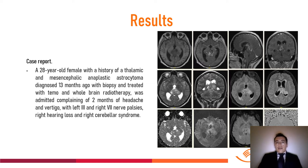MRI before the first surgery is shown here. An infiltrative lesion is observed with a cystic component at the mesencephalic tectum, thalamus, and left ventricular atrium — hypointense on T1 with heterogeneous contrast enhancement, hyperintense on T2 and FLAIR without restriction to diffusion, and without calcification or bleeding.